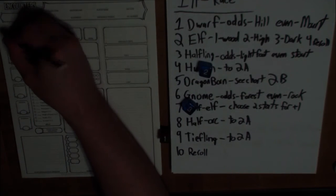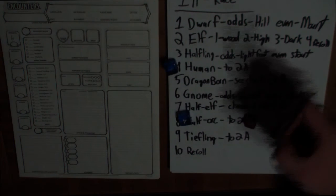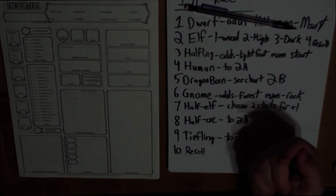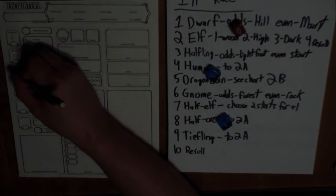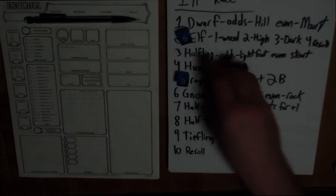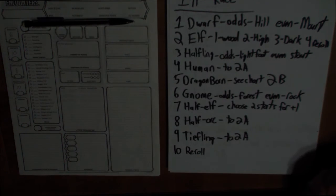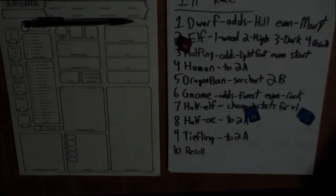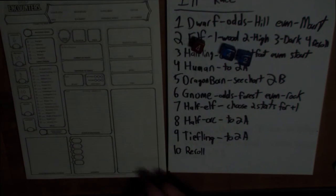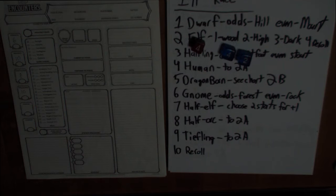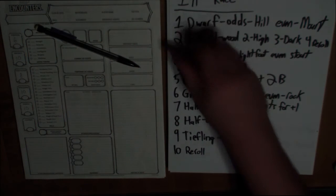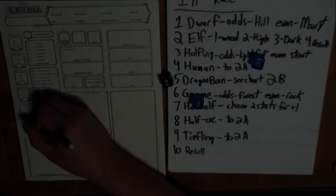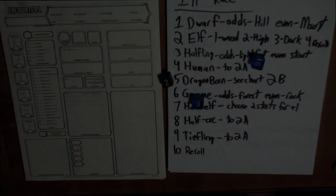We got a 6 for strength. A 10 for dexterity — so we're weak and wimpy but not completely out of shape. An 8 for constitution — okay, maybe we are. A 10 for intelligence. One of the reasons this works so well in 5th edition is there aren't really any alignment, race, or stat restrictions — those only come up when you're trying to multi-class, where you better have some 13s on your character sheet. We got a 10 for wisdom, and an 8 for charisma. I said I wanted something that sucked, and I got it.